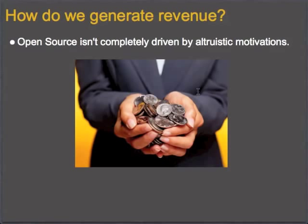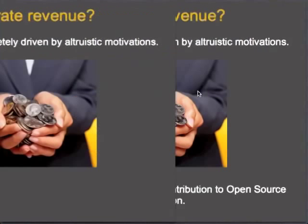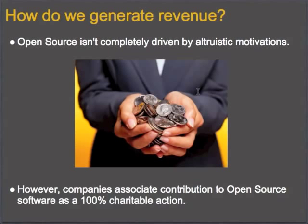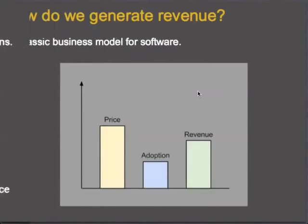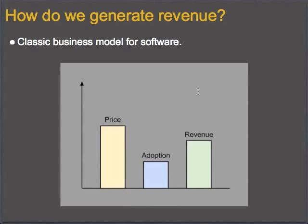A lot of companies associate contribution to open source as a 100% charitable action — a write-off. They say if they're going to give the software away, that is a loss and they can write it off. But what they don't understand is the power of the community you get from those open source contributions. The reason they feel that way is because they're locked into this old and classic model for software. I'm giving you a very simplified version of this to get a point across.